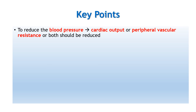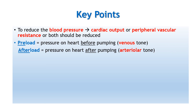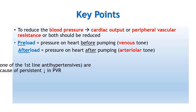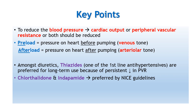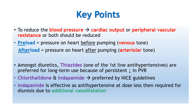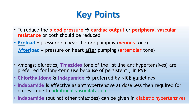Key points from today's discussion: To reduce blood pressure, either cardiac output or peripheral vascular resistance or both should be reduced, because blood pressure equals cardiac output multiplied by PVR. Preload means pressure on the heart before pumping the blood, so it is in relation with venous tone. Afterload means pressure on the heart after pumping the blood, so it is in relation with arteriolar tone. Amongst diuretics, thiazides are one of the first-line antihypertensive drugs and are preferred for long-term use in hypertension treatment because of persistent fall in peripheral vascular resistance. Chlorthalidone and indapamide are the preferred thiazide or thiazide-like diuretics by NICE guidelines. Indapamide is effective as an antihypertensive at a dose less than required for diuresis due to its additional vasodilation action, and can also be given in diabetic hypertensive patients, while other thiazide diuretics are contraindicated.